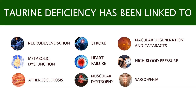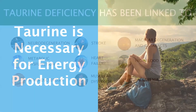There are many reasons why taurine plays a role in these conditions. It's required to regulate water balance, for cell signaling, to make bile and excrete toxicants, and most importantly, it's required for mitochondrial function and energy production.